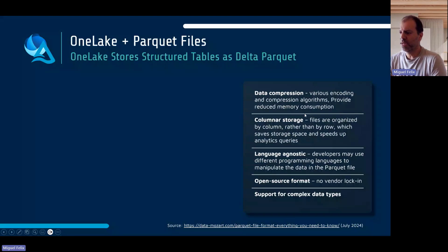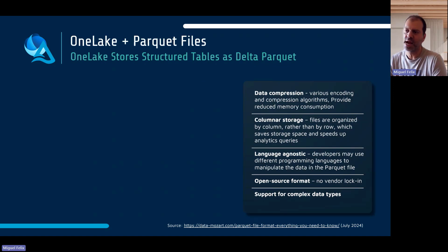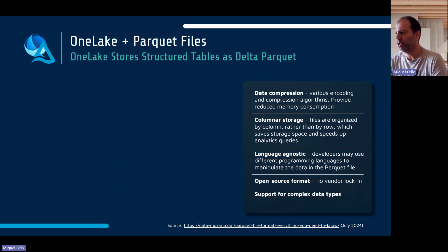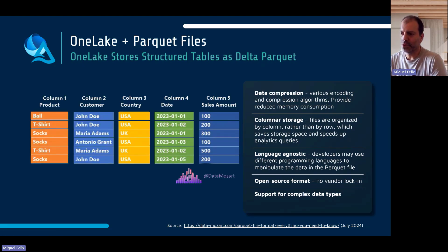Let's look a little bit at Parquet files. I'm not an expert, but I took this information from Nicola, the Data Mozart — a big shout out to him — and also to Sandeep, who I talked with a few times to understand the concepts of Direct Lake, Parquet files, and fallback. They helped me get some information on top of what's already available. Parquet files allow for data compression using encoding algorithms and provide reduced memory consumption.